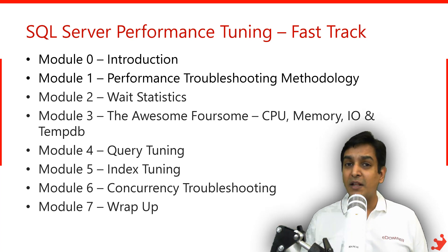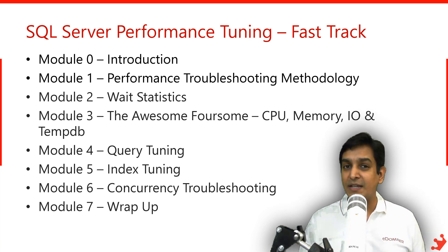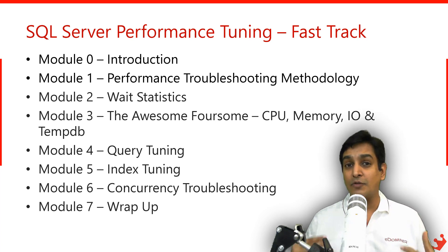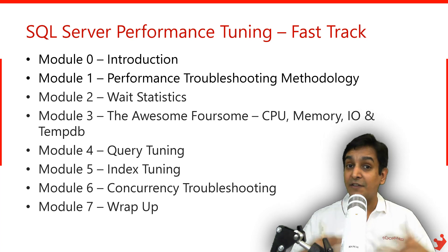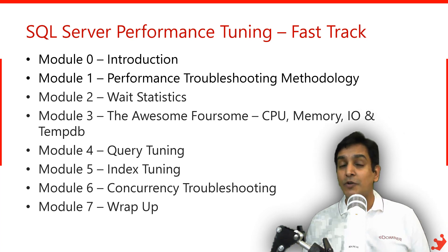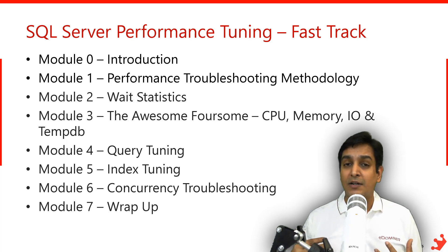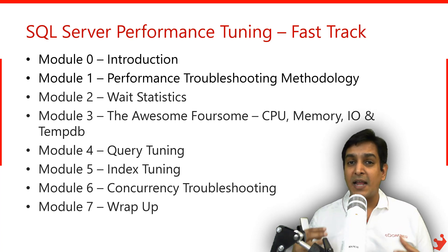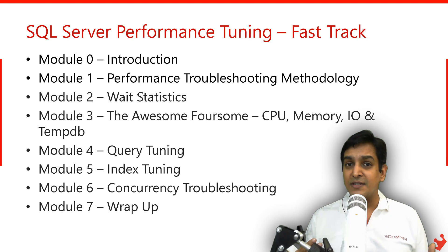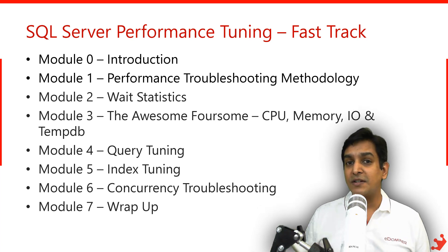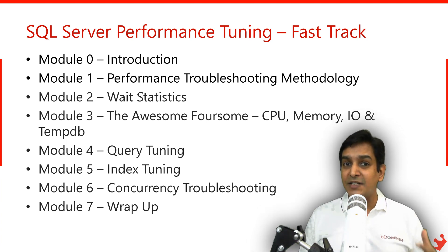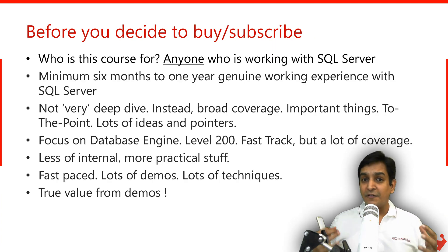Module 6 is the last module for this course, where we talk about troubleshooting blocking scenarios and how to troubleshoot deadlocks using graphs, covering different types of deadlocks. I show you examples of how to troubleshoot a deadlock, apply best practices, and get rid of deadlocks. That wraps up this Fast Track course with about 15 to 20 hours of content.